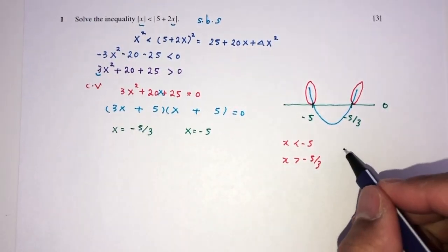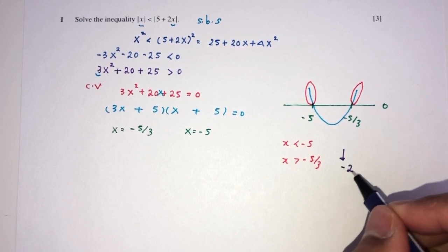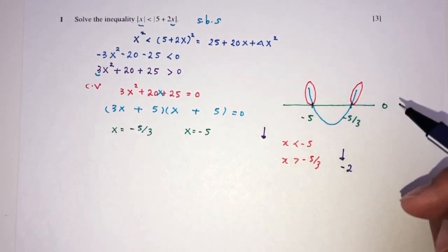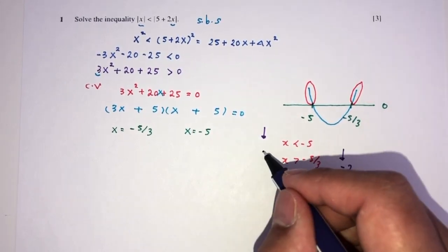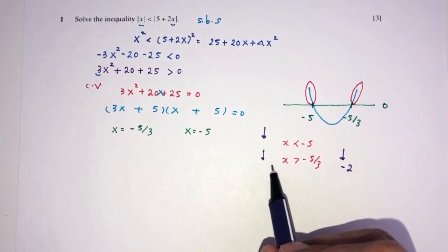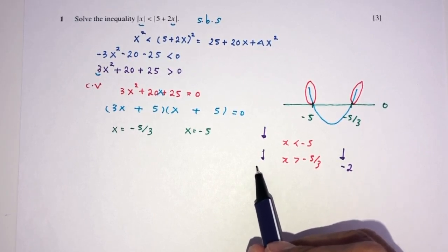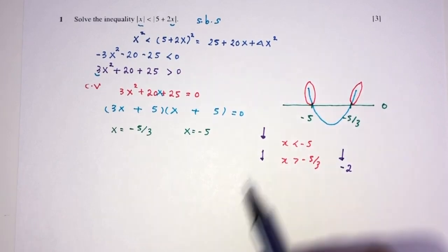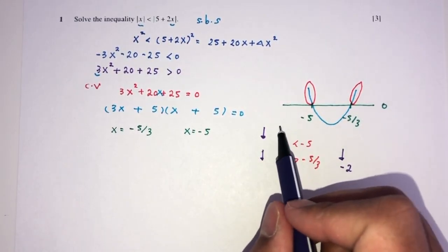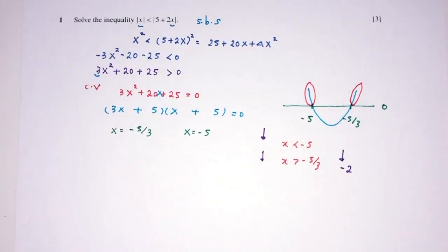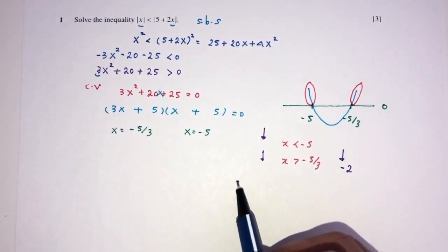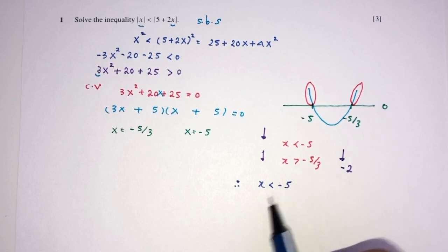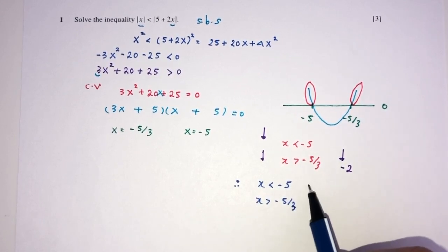You can always double-check your values — take the value of minus 2 and check, or take minus 3 and check. For A Level math, I always recommend: once you find the values of x, just check if they are correct. The answer for question number one is x less than minus 5 and x greater than minus 5 over 3.